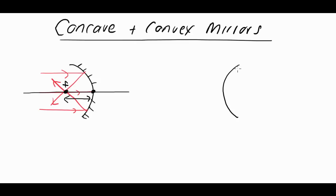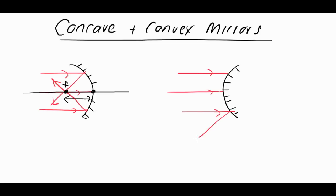Convex mirrors are the opposite way around. They're often referred to as diverging mirrors because light rays that enter into the convex mirror tend to diverge and spread out. Those diverging light rays come back to a focal point as well, but we call this a virtual focus, and normally we use a little dashed line to represent the virtual focal point.